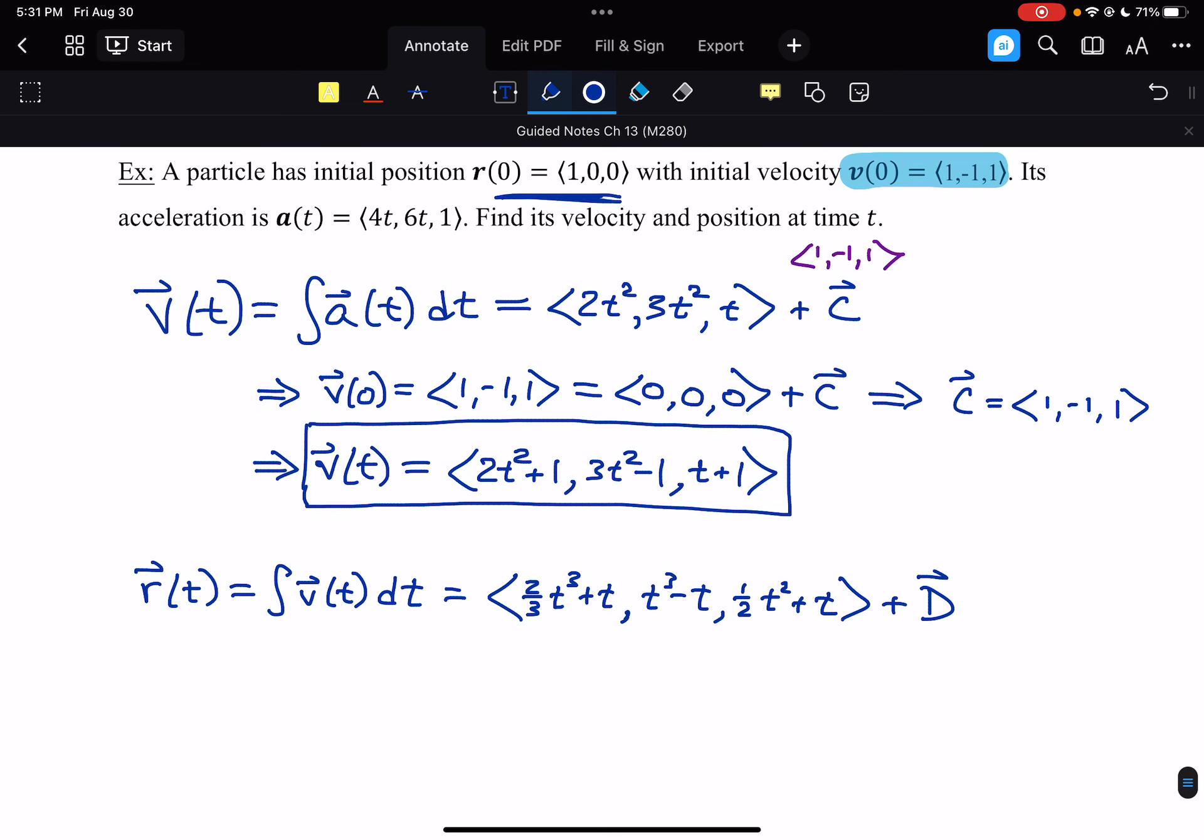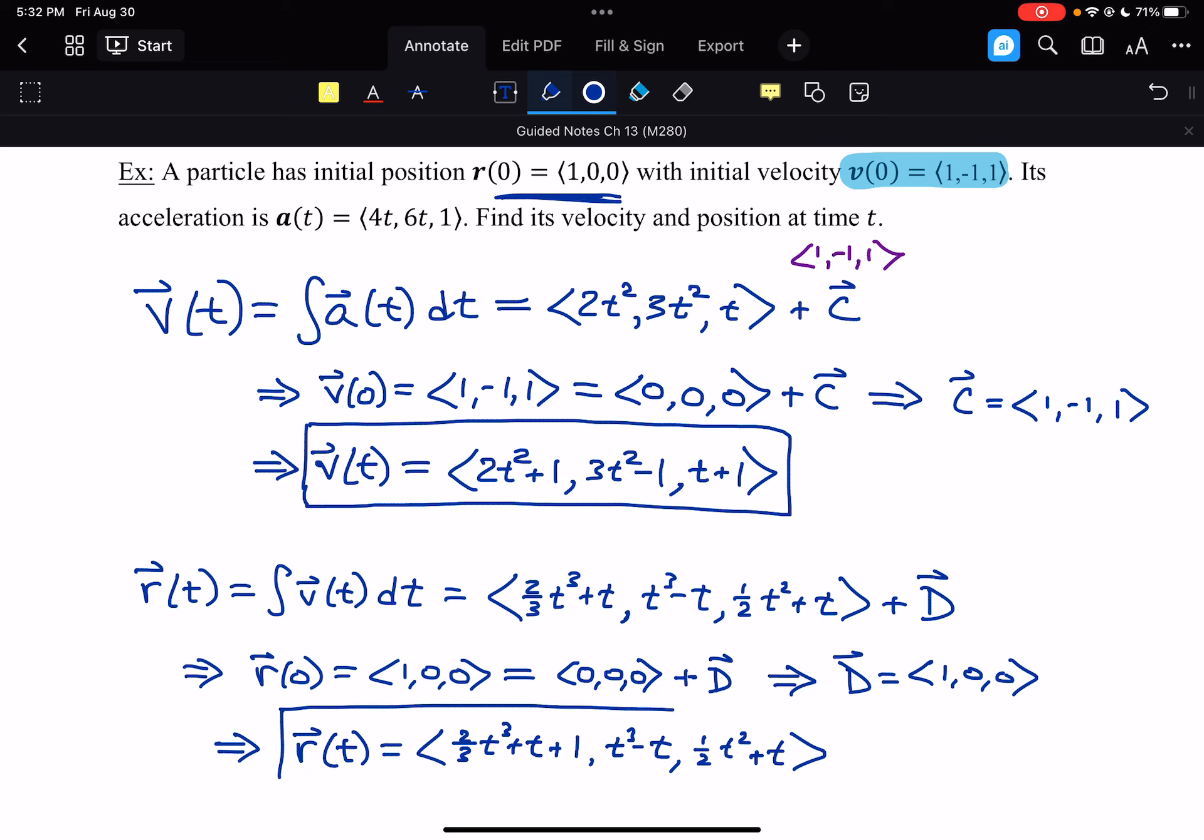If we plug in 0, again this doesn't always happen, but these all do turn into 0s. So we get (0,0,0) plus that vector constant of integration. So d = (1,0,0). We just add that into the corresponding components, which only changes the first one. So we have r(t). Our position formula is (2/3 t³ + t + 1, t³ - t, 1/2 t² + t). And that is our position function.